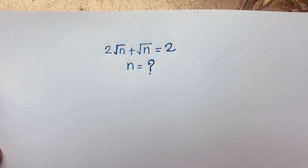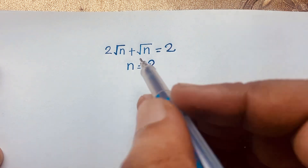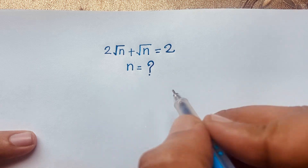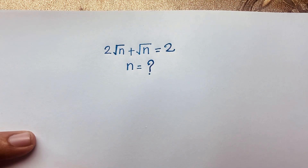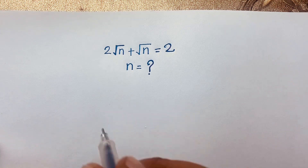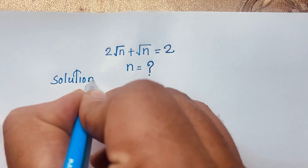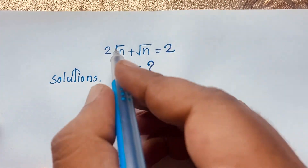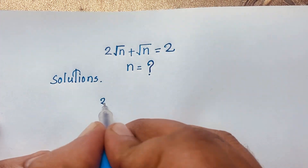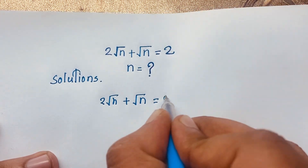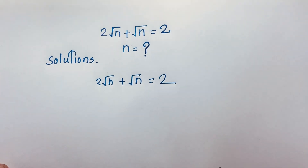Hello everyone. In this video we have solved a nice radical math olympiad question. The question is: 2√n + √n = 2. How do we solve this math olympiad question? Here is the solution.